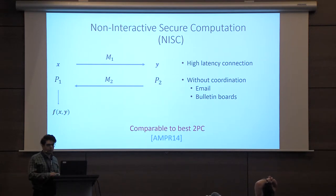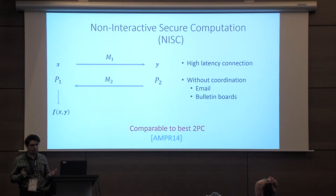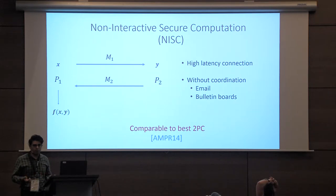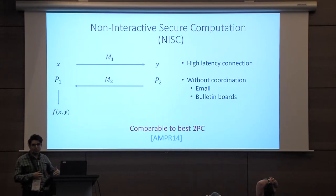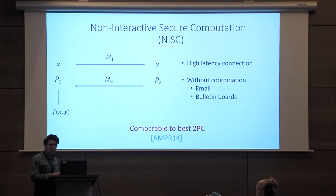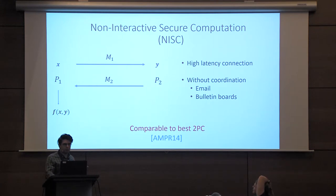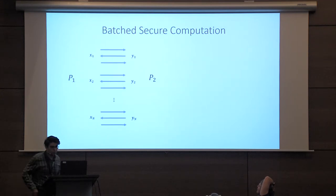There's lots of work that studies this — theoretical constructions and so on. But we also know that you can achieve this with very good concrete efficiency that is fairly comparable with the best secure two-party computation protocols we know. The best two-party computations keep changing, but very, very close in terms of efficiency. So if we can minimize round complexity and have very good concrete efficiency, we would do it.